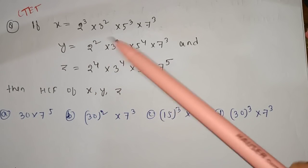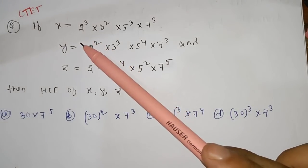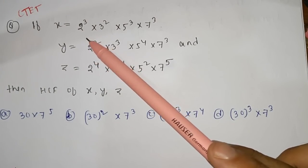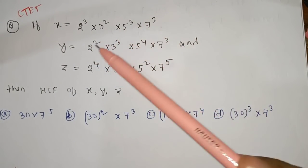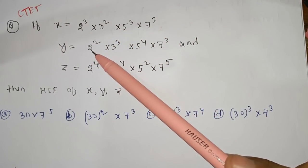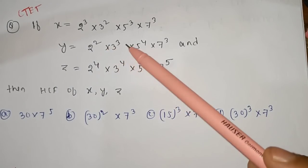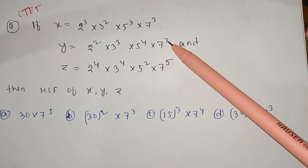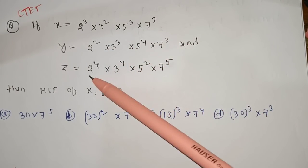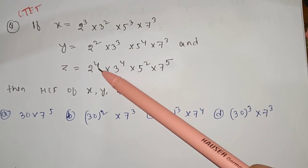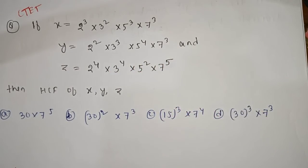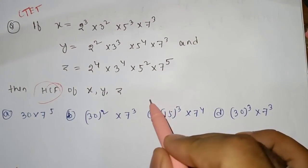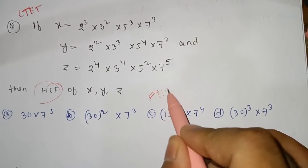x is equal to 2 cube into 3 square into 5 cube into 7 cube. y is equal to 2 square into 3 cube into 5 to the power 4 into 7 cube. And z is equal to 2 to the power 4, 3 to the power 4, 5 square into 7 to the power 5.